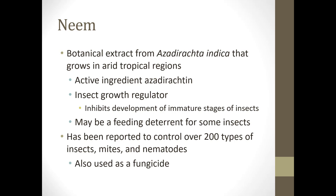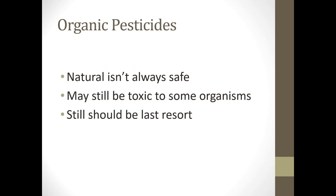Neem comes from the Azadirachta indica plant that grows in tropical regions. It works as an insect growth regulator, inhibiting the development of insect stages, and may also be a feeding deterrent for some insects. It's been reported to control over 200 types of insects, mites, and nematodes, and can also be used as a fungicide. With organic pesticides, just because it's natural doesn't mean it's always safe — it may still be toxic, and you still want to think of chemical controls as a last resort.